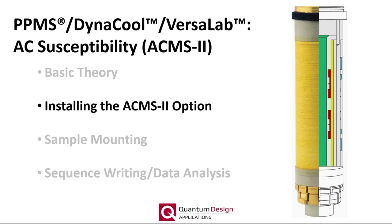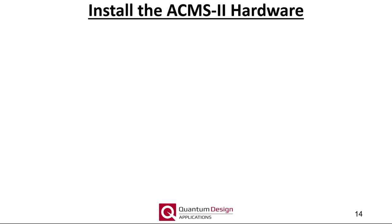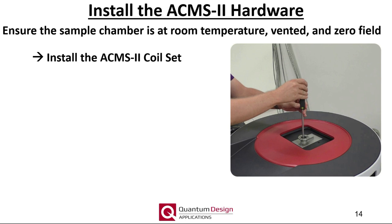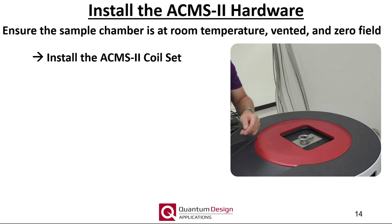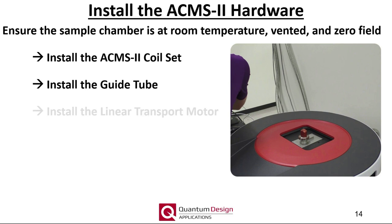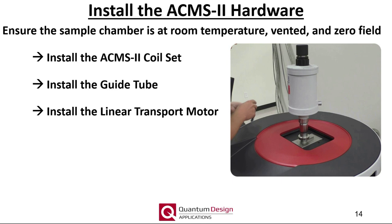Moving on to installing the ACMS2 option. The first step is to install the ACMS2 hardware. To do so, make sure the sample chamber is at room temperature, vented, and at zero field. Then install the ACMS2 coil set using the puck insertion tool. After the coil set is installed, the guide tube is then inserted, followed by carefully placing the linear transport motor into place and finally clamping it.